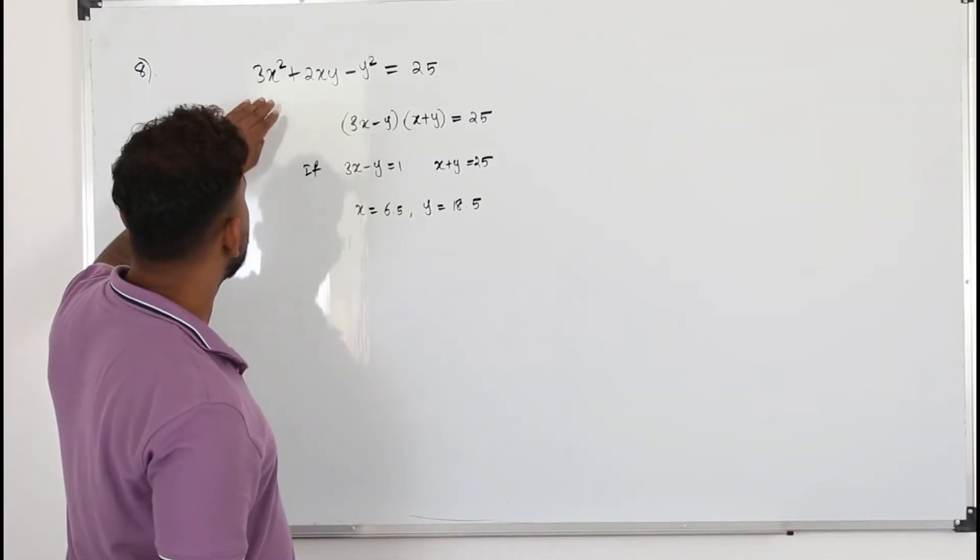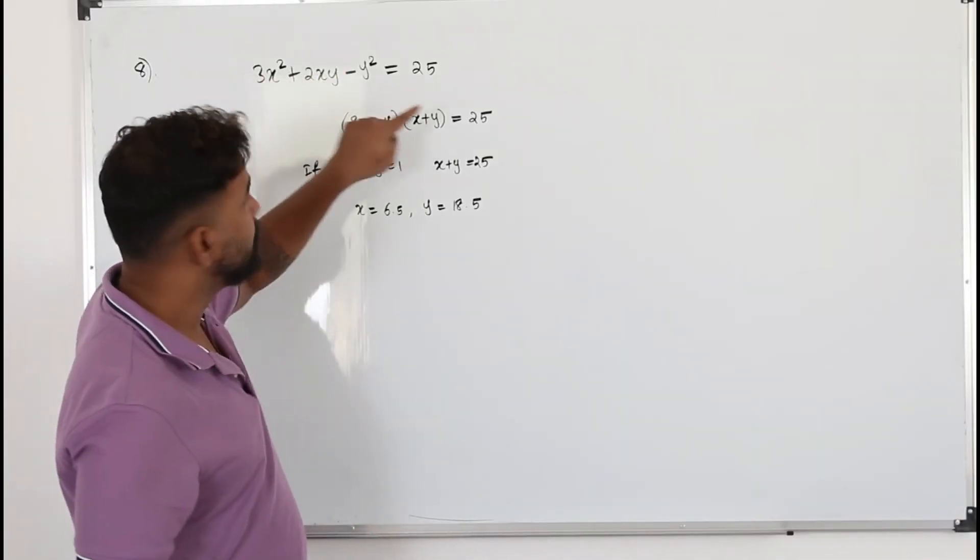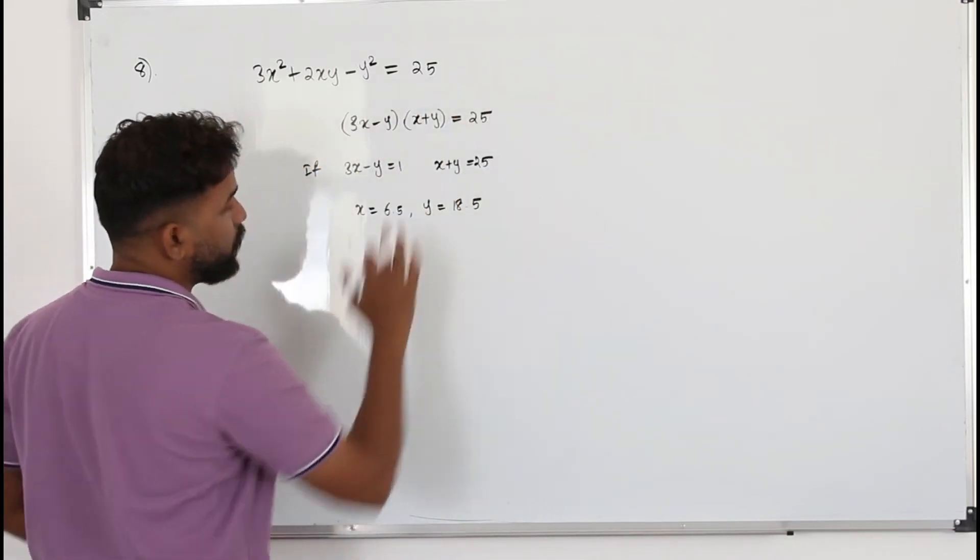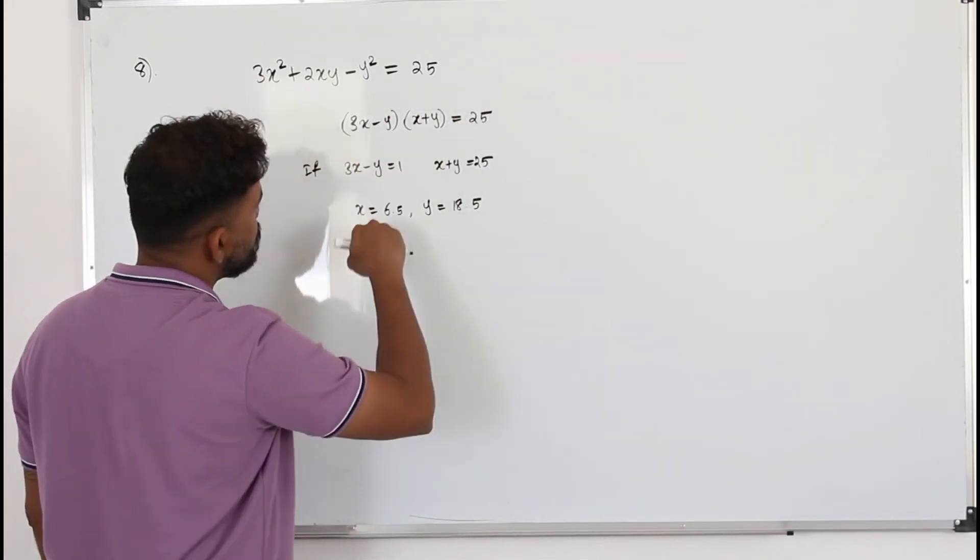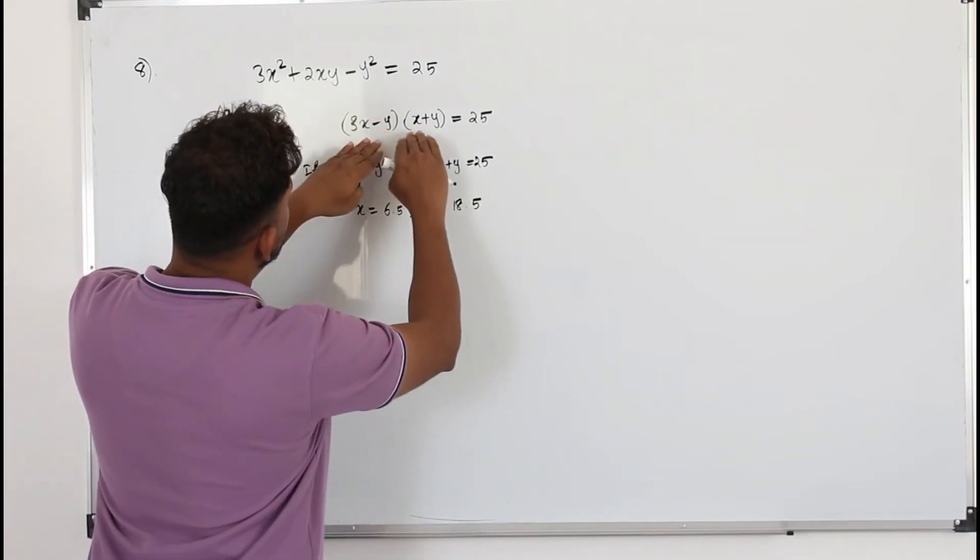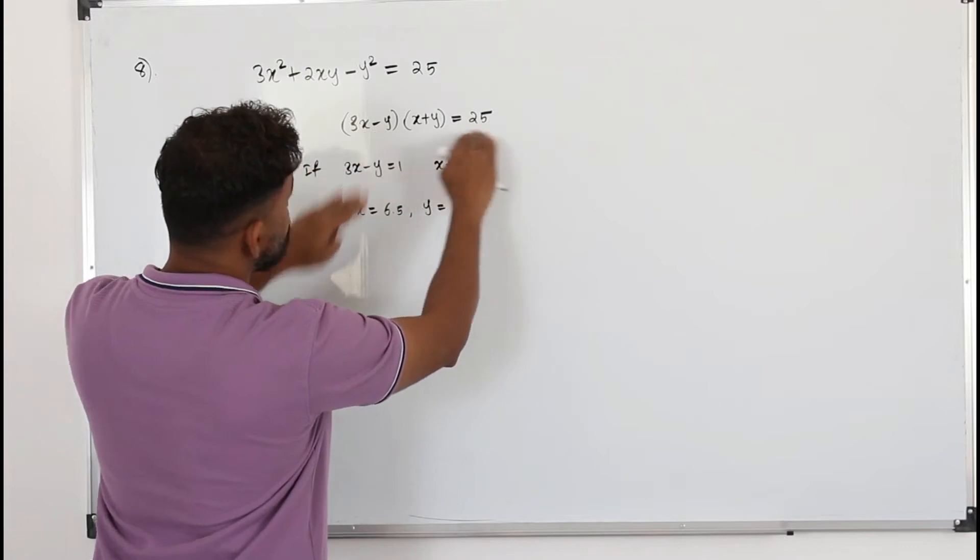Here it says there are no positive integers x and y that satisfy this equation and the start of the student's proof is given. The student has done these three steps. He has factorized this function into these two factors equals 25.